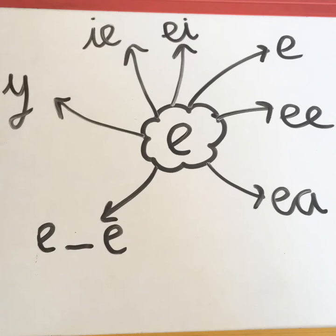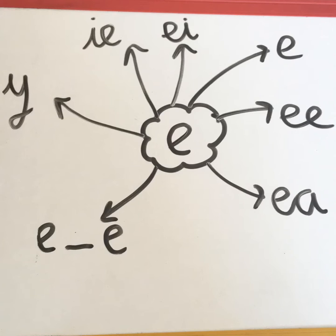So how many did you get? There are seven. You can have just an E by itself, you can have two E's, you can have an E and an A like in peach, you can have a split digraph like here or theme with a letter in the middle, and you can have a Y at the end of a word like in happy or memory. Then the two we're going to be looking at this week are IE and EI.